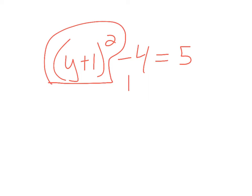Take a look at another one like that. So let's say I have y plus 1 squared minus 4 equals 5. First thing we're going to do is get this all alone. So I'm going to add 4 to each side. So I have y plus 1 squared equals 9.